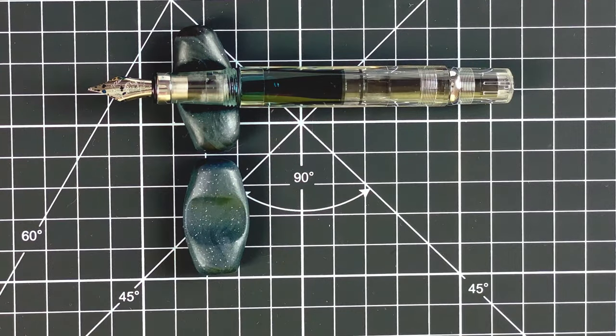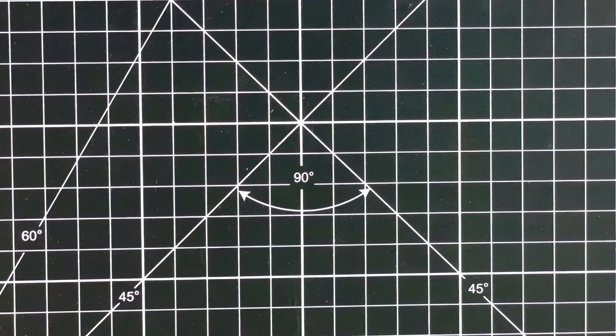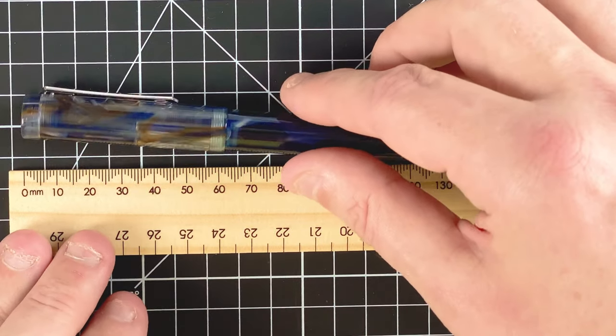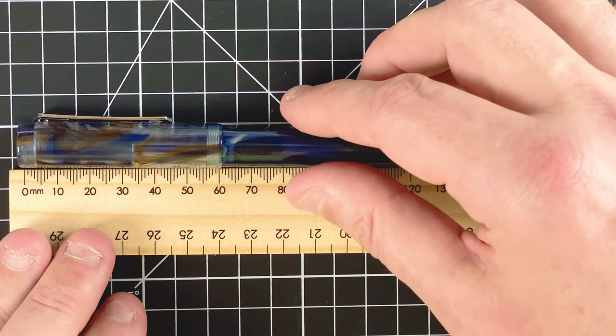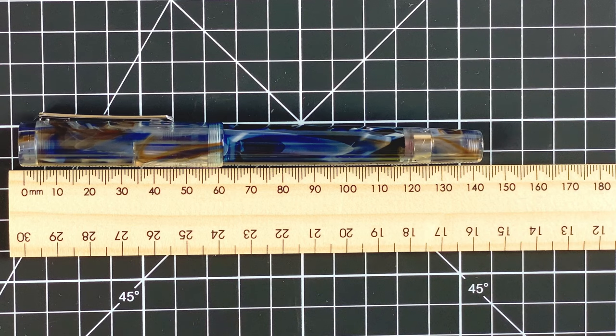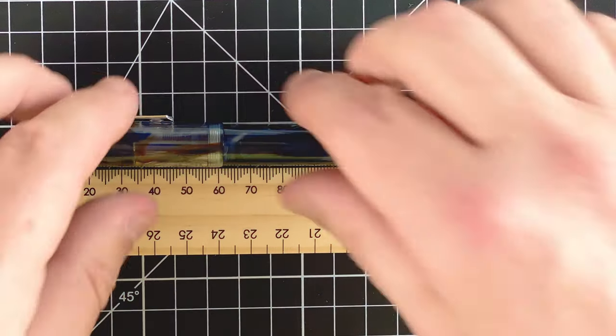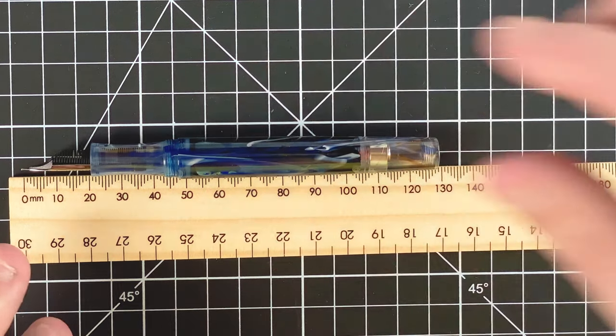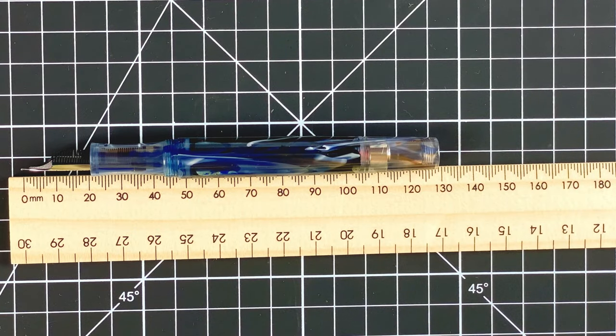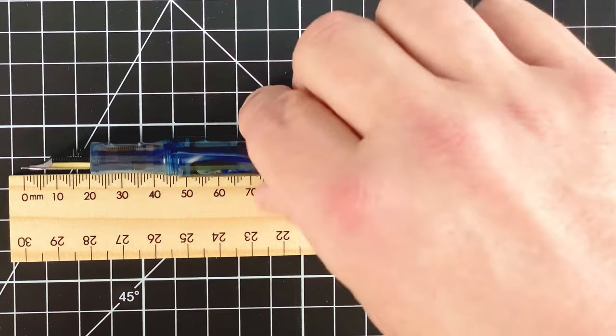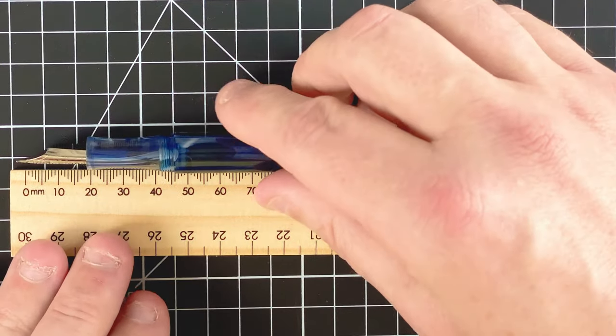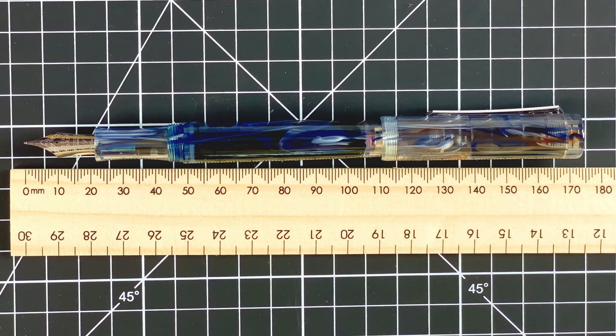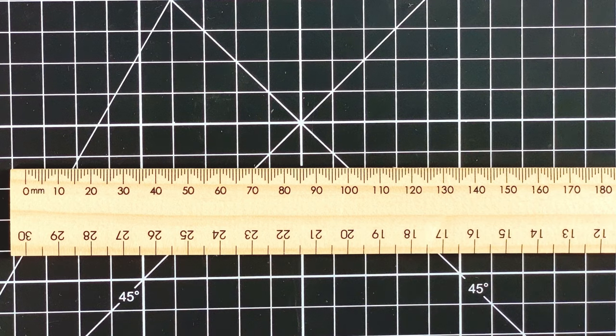Pop the caps back on. And let's do some measurements. So I'll fetch in my trusty rule. We'll start with the 487. So with the 487, its length when it's capped is 14.1 centimeters. Uncapped, that comes in at 12.8 centimeters. Posted, posts really nice. That comes in at 17 centimeters.